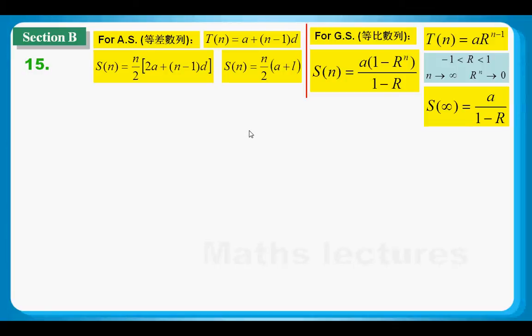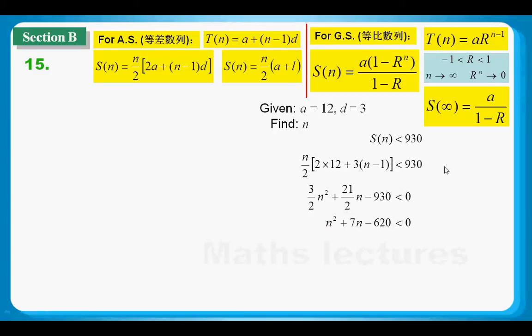And, as I say, the question restricted the number of seeds cannot be more than 930. So it is obviously talking about inequality. Because not just one number is less than 930. 900 is less than 930, 100 is less than 930. So we are talking about a range of number. Whenever we talk about a range of number, then it is talking about inequalities.